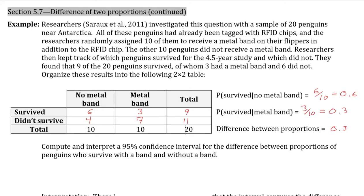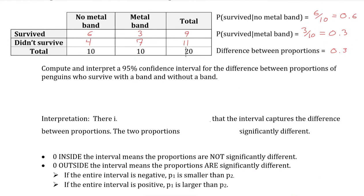What we are going to do now that we have these two different proportions, is compute and interpret a 95% confidence interval for the difference between proportions of penguins who survive with a band and without a band. To do this, as I said earlier, I'm going to switch over to GeoGebra.